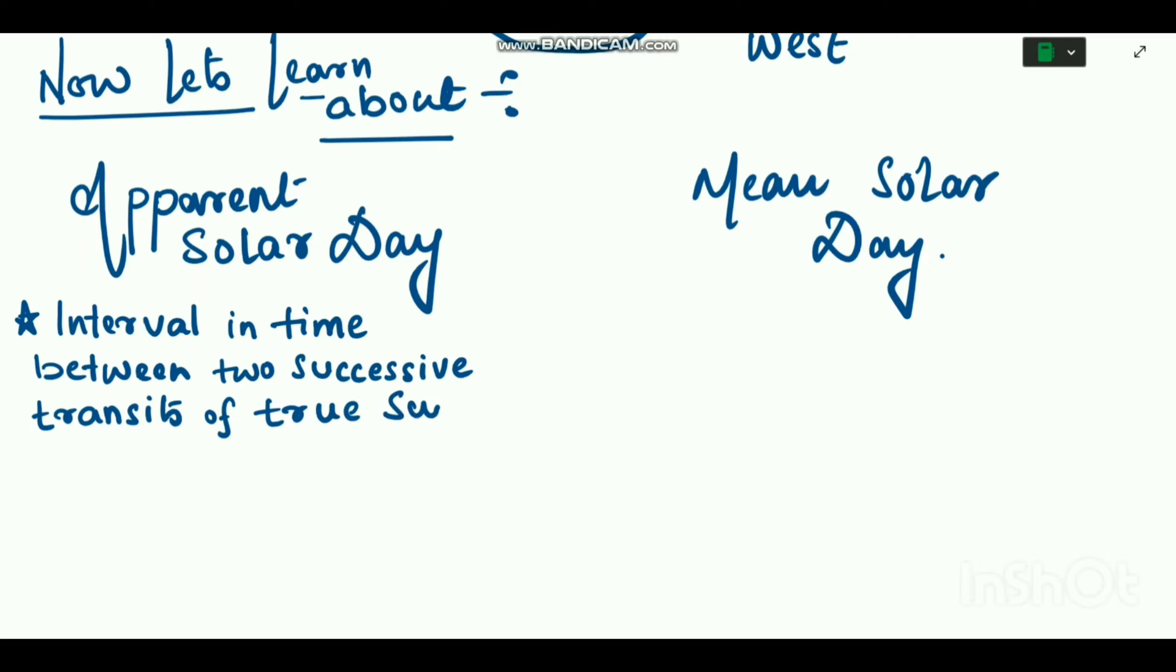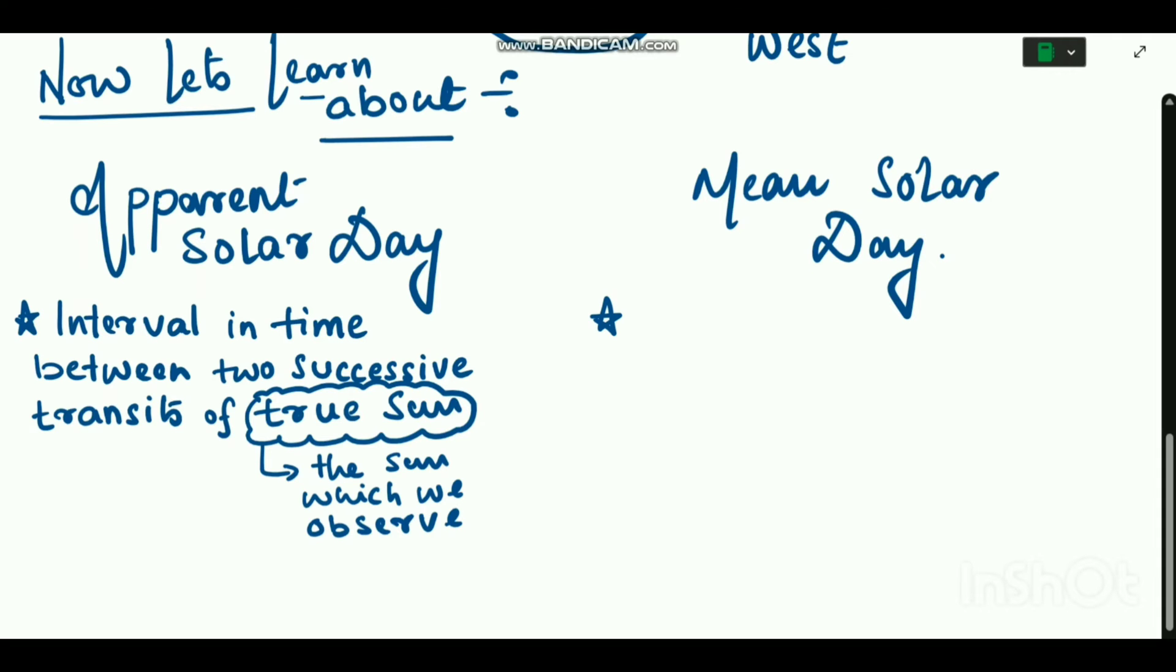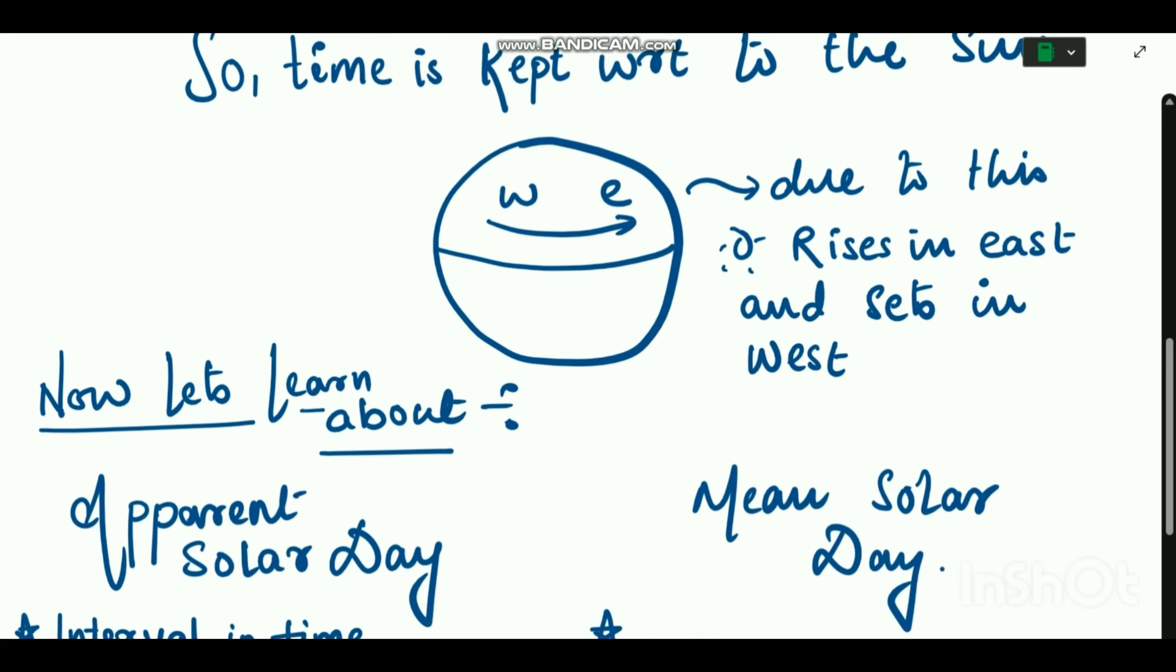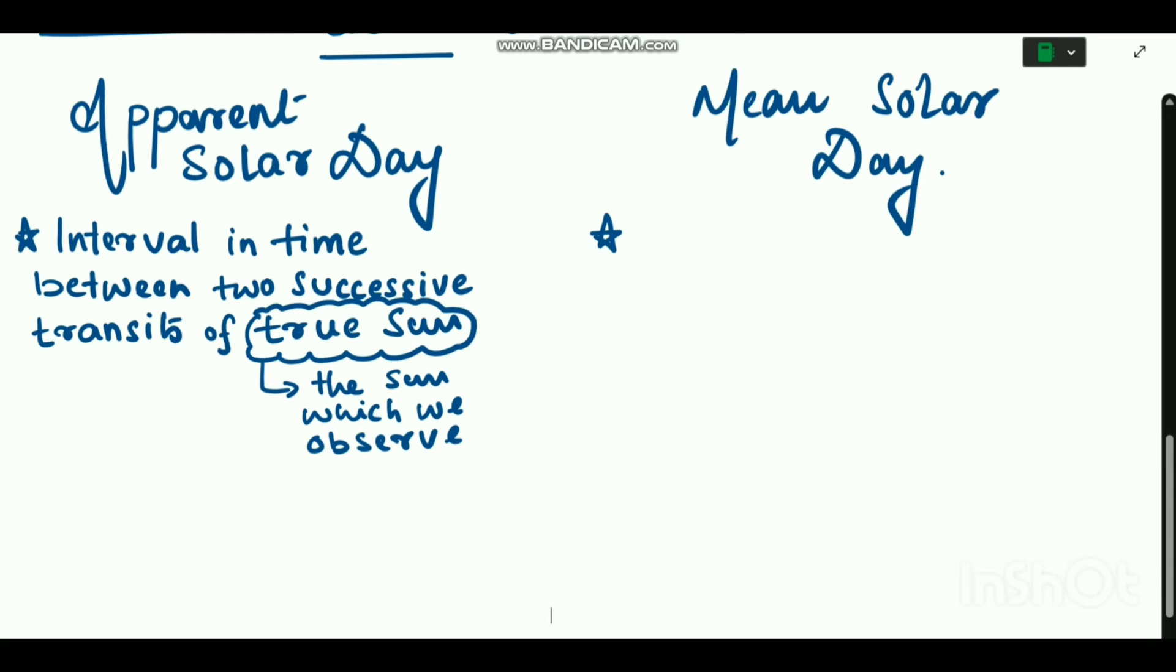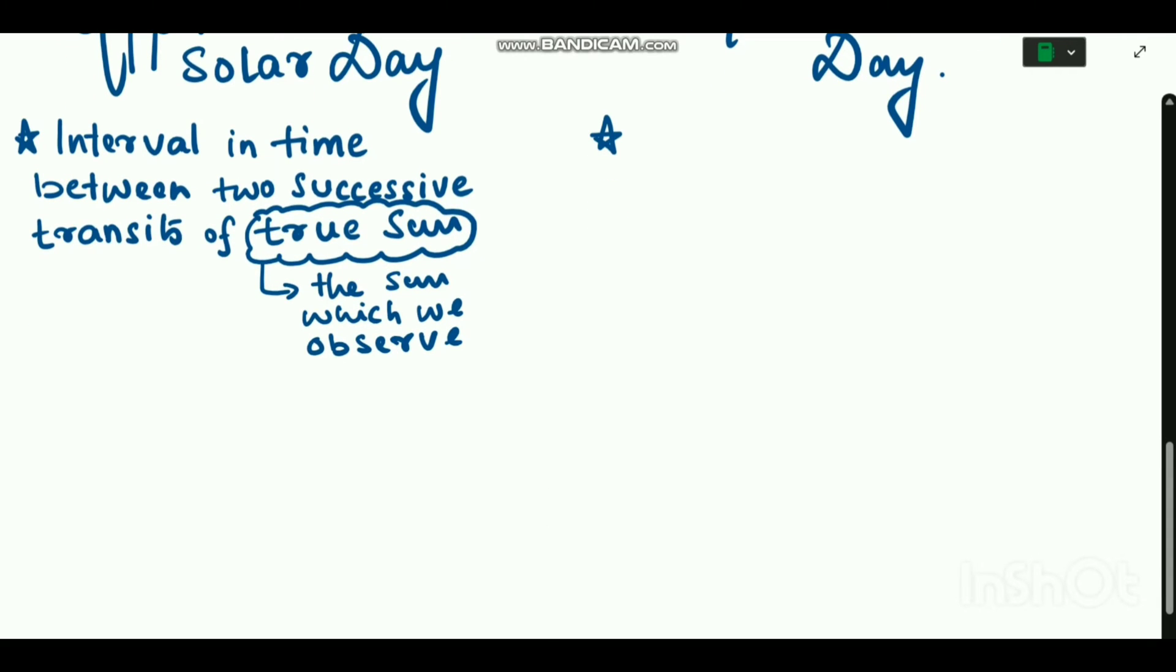Interval in time between two successive transits of the true Sun. But the question is, what is true Sun? True Sun is the Sun which we all observe, but the apparent movement of this true Sun is not uniform.